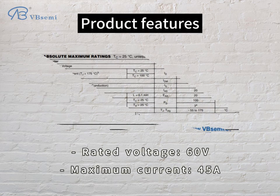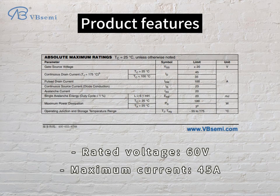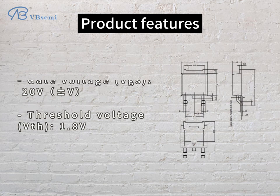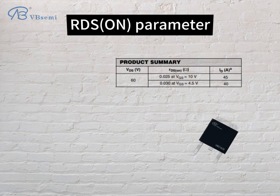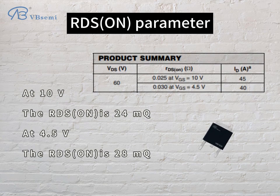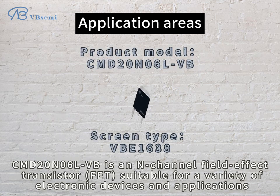Product features: rated voltage 60V, maximum current 45A, gate voltage VGS 20V, threshold voltage Vth 1.8V. RDS(on) parameter: at 10V, RDS(on) is 24mΩ; at 4.5V, RDS(on) is 28mΩ.